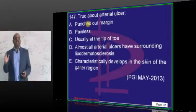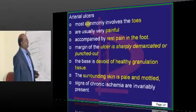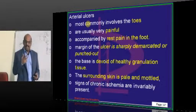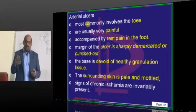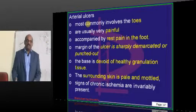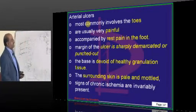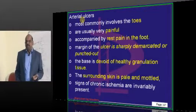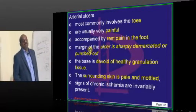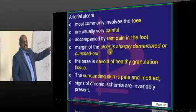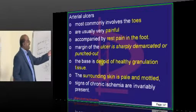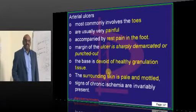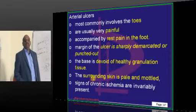Arterial versus venous ulcers — a very traditional MCQ in the MD entrance exam. Arterial ulcers are seen classically on the toes. Patients who smoked developed peripheral vascular disease, thromboangiitis obliterans, and the ulcer was in the leg or toes. It will be painful. Since arterial ulcer is a consequence of ischemia, claudication can accompany it and rest pain can be there in the foot. The margin of the ulcer is sharply demarcated and punched out, and the base is devoid of any healthy granulation tissue. Surrounding skin is typically pale and mottled due to decreased arterial blood flow, and signs of chronic ischemia are classically present.